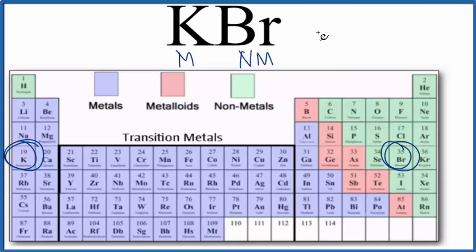So when we have a metal and a nonmetal, we have an ionic compound. So according to the periodic table, potassium bromide, that's an ionic compound.